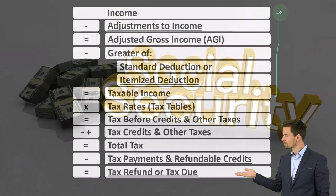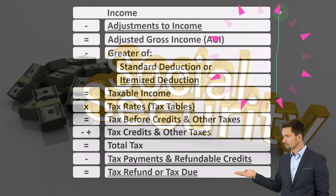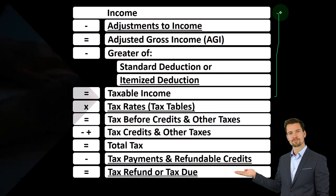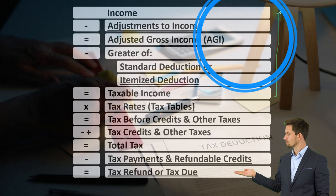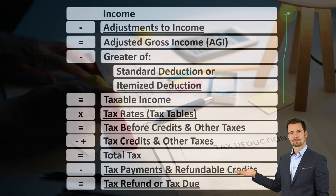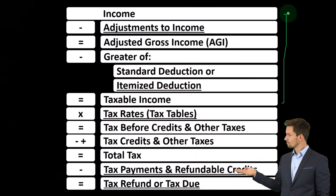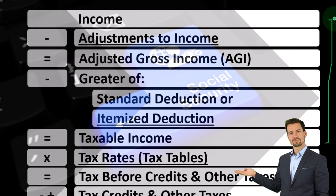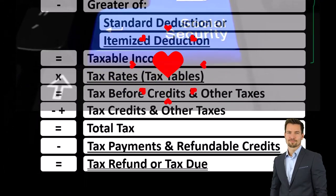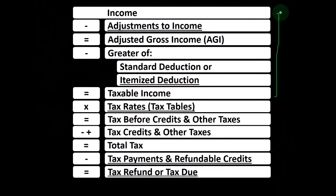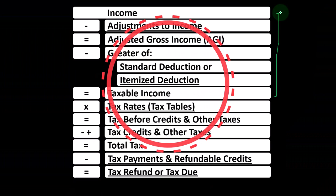Quick recap on Social Security benefits. There are two sides: our working years, where Social Security taxes are paid into the system — coming out of W-2 wages or self-employment taxes for sole proprietors — and then in retirement years, we might get distributions from the plan. Now money is coming in, and we're thinking: is it something we have to include in income?